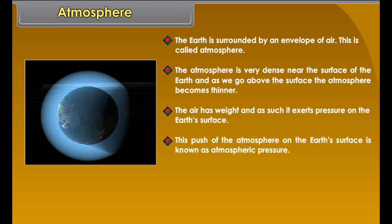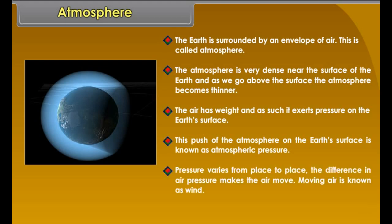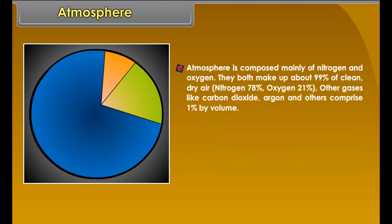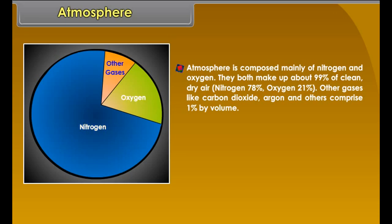Atmosphere. The earth is surrounded by an envelope of air called the atmosphere. The atmosphere is very dense near the surface of the earth, and as we go above the surface, it becomes thinner. The air has weight and exerts pressure on the earth's surface. This push of the atmosphere on the earth's surface is known as atmospheric pressure. Pressure varies from place to place, and the difference in air pressure makes the air move. Moving air is known as wind.